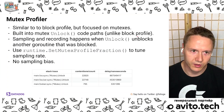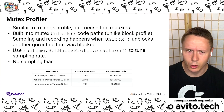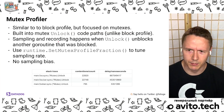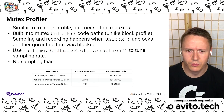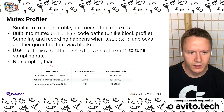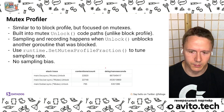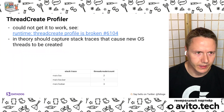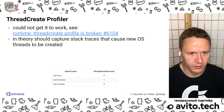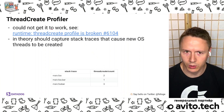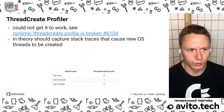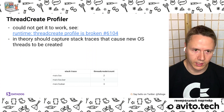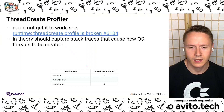The mutex profiler is basically the same as the block profiler but only for mutexes. It's built into the unlock code path, unlike the block profiler which is on the lock code path. The sampling and recording happens when unlock unblocks another goroutine that was blocked. You can use runtime.SetMutexProfileFraction to tune the sampling rate, and there is no sampling bias. The pprof output looks exactly the same as for the block profiler. As for the final profiler, the thread create profiler: I was not able to get it to work. I found a GitHub issue indicating the thread create profile is broken. In theory it should capture stack traces that cause new operating system threads to be created.